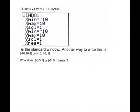Let's talk a little more about our viewing window. This is what we saw on the calculator as our standard window, and here's another way to write it using bracket notation. The format is [x-min, x-max, x-increment] by [y-min, y-max, y-increment]. So the standard window is [-10, 10, 1] by [-10, 10, 1]. For example, the notation [-5, 5, 1] by [-5, 5, 1] means negative 5 is the lowest x, 5 is the highest x, 1 is the increment, and the same values apply for y.